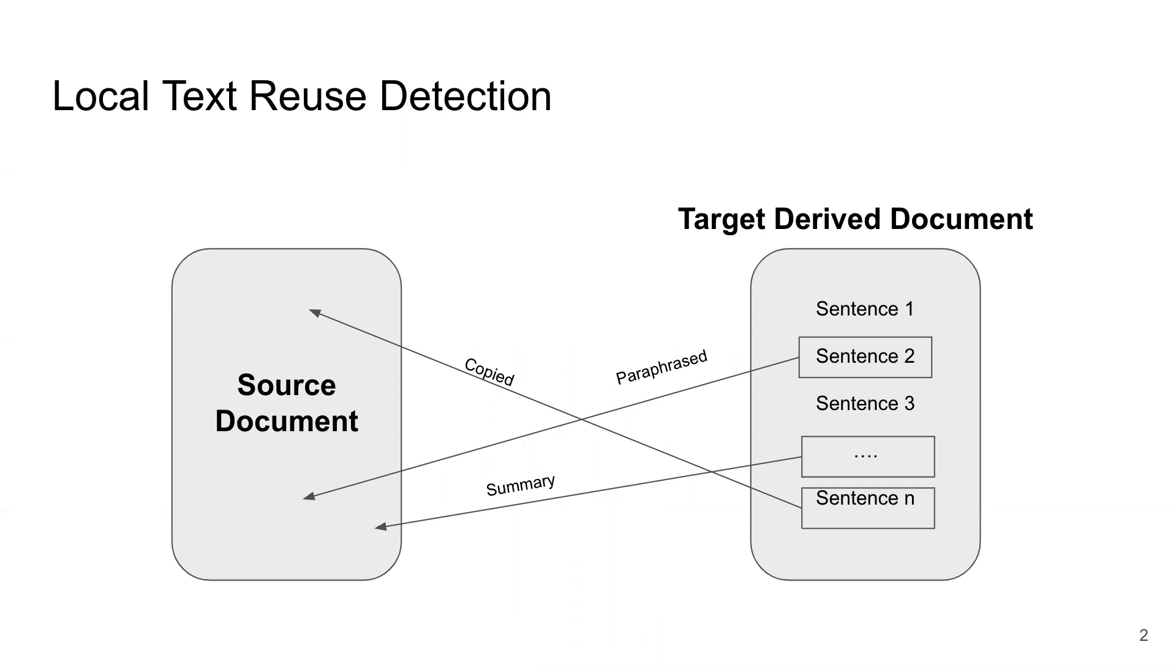As seen in this figure, in this problem we have a pair of documents, a source on the left and a target on the right. We're trying to predict which portions of the target document have been derived in some way from the source. A common version of this problem is plagiarism detection, where the source and target documents could be student essays.